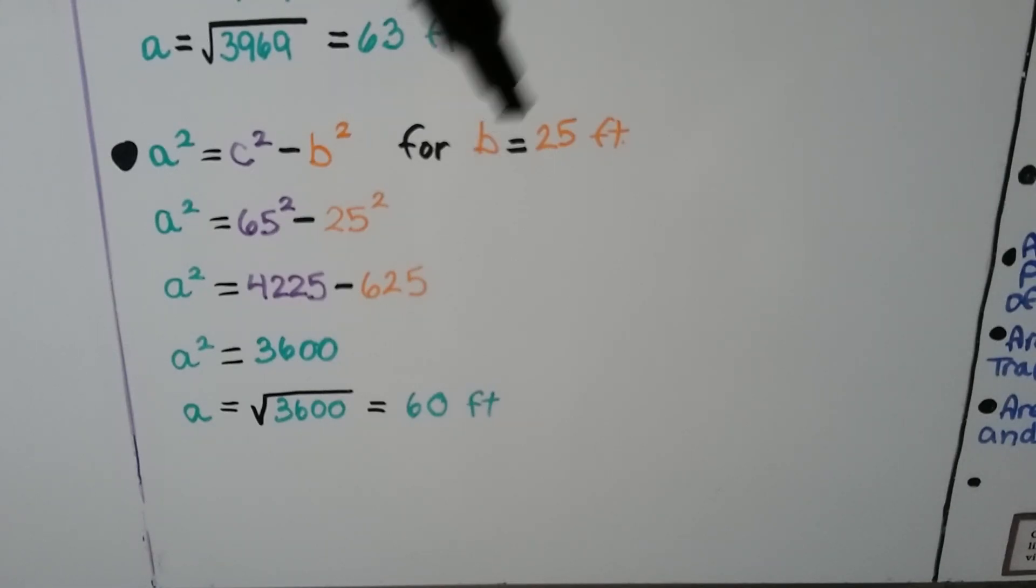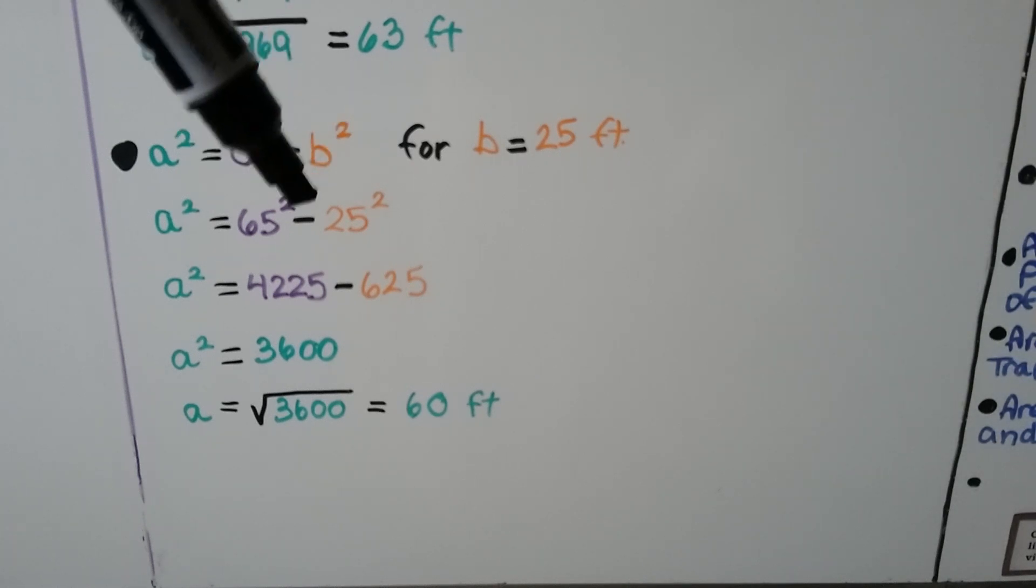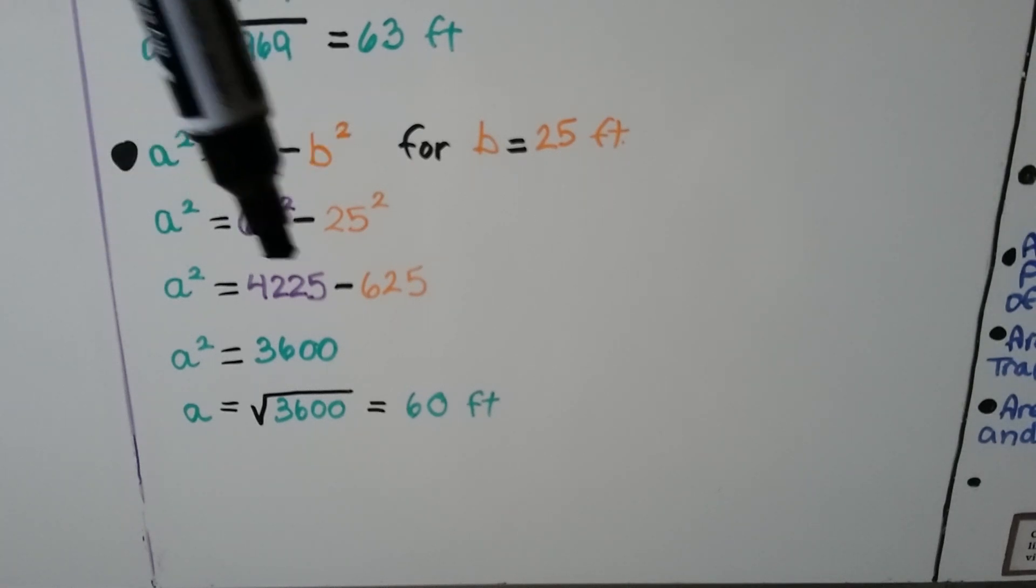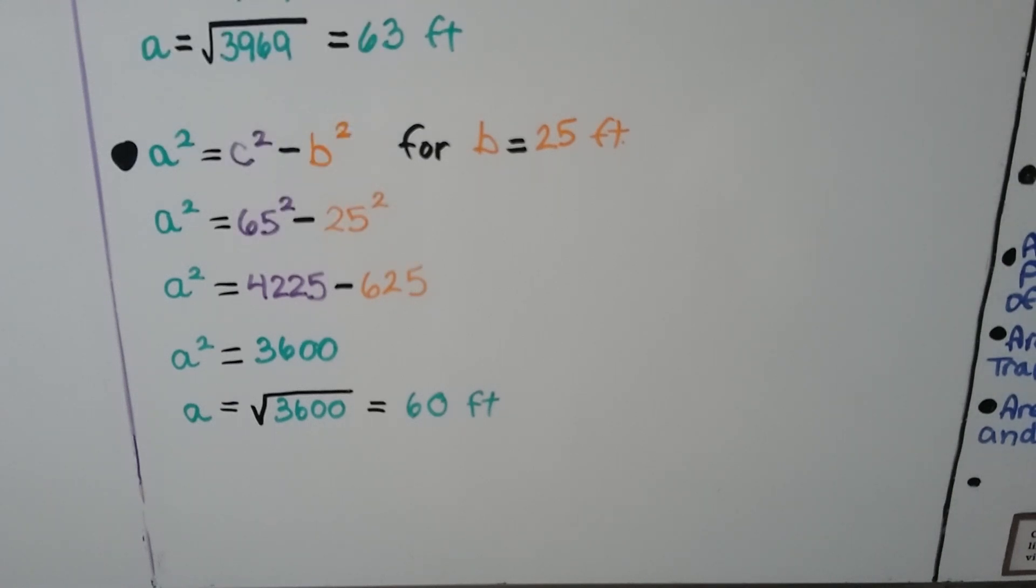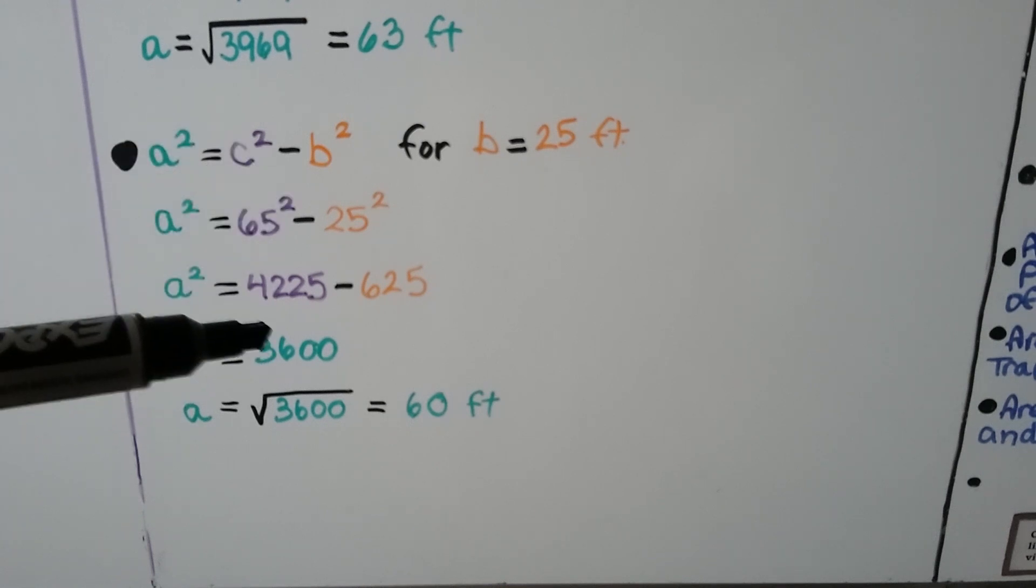If the value of b is 25 feet, then we have 65 squared minus 25 squared. Now we have 4,225 minus 625. That gives us 3,600. We remove the exponent by putting a radical sign around that side. We get 60 feet.